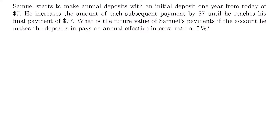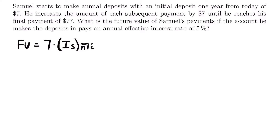So that's a lot to keep track of, but that's the type of annuity we are working with. We know we're looking for a future value, and the notation for the future value of an arithmetic increasing annuity is capital I, then S, then N bracket I. This notation represents an arithmetic increasing annuity where each payment is increasing by $1. Since our payments are increasing by $7, we need to multiply that amount by this notation — so in front we're going to have 7. To use this formula we also need N, the number of payments, and I, the interest rate.